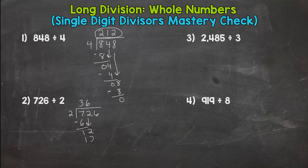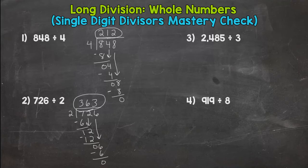How many groups of 2 are in 12? Six. And we hit it exactly. 12 minus 12 is zero. And then bring down this 6. How many groups of 2 are in 6? Three. Three times 2 is 6. Remainder zero. 363.